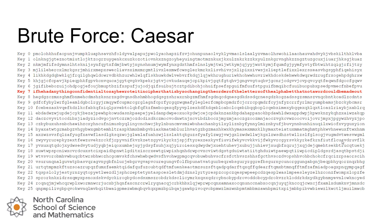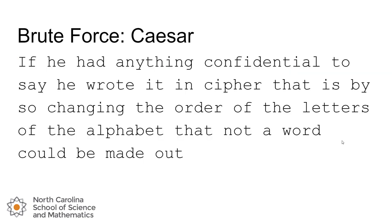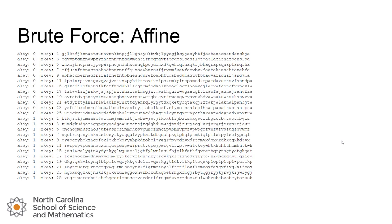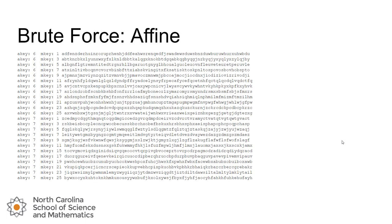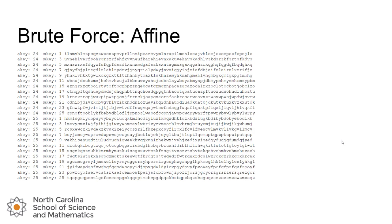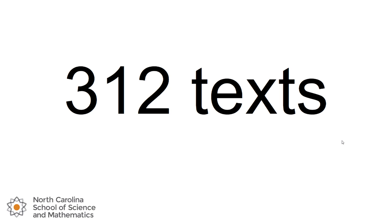One thing you might notice is that it was very visual — what we had to do is actually visually inspect all 26 outputs and figure out which one looks like it has English in it. And for 26 of them, that's not too bad. But let's look at another cipher, the affine cipher. For the affine cipher, there are a lot more possibilities. When we start brute forcing this, we're going to have pages and pages of candidates because there are just so many key pairings. In fact, there are 312 candidate texts possible for the 312 keys of the affine cipher.